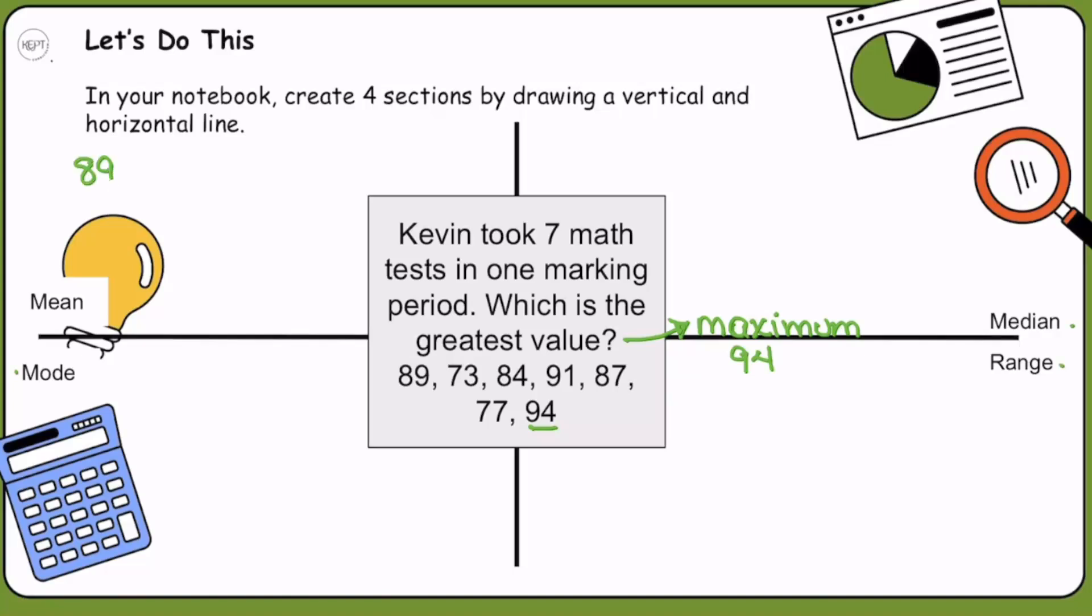Can we find Kevin's average, which is also known as the mean? Can we find the median, the mode, and the range? We absolutely can. Let's do this. We have 89 + 73 + 84 + 91 + 87 + 77, and lastly 94. Those are all of the test scores. We're going to add those together, and that gives us a total of 595. The next step is to see how many tests Kevin took. We know from the problem he took seven math tests. We are going to take 595 and divide that by 7, and that average is 85.